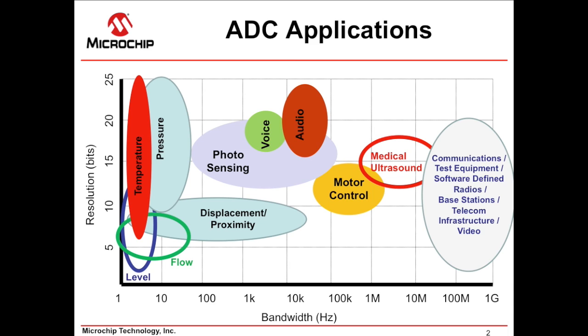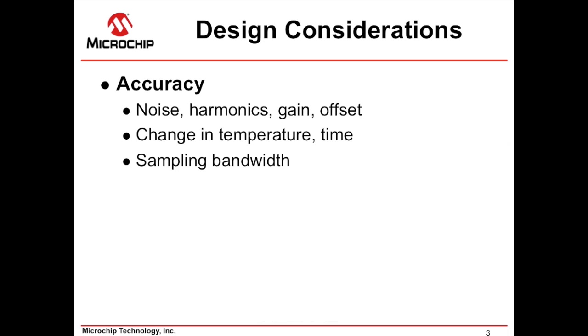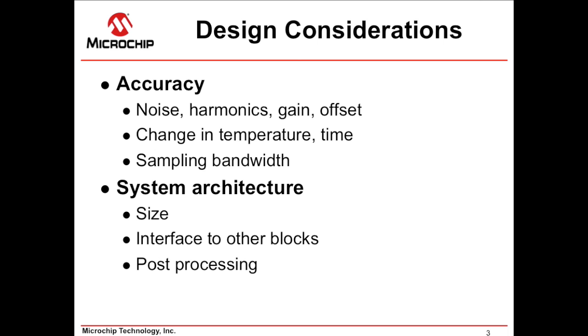When it comes to looking at various concerns or considerations that you have in your design, obviously, accuracy is one of the first things you look at. How accurate do you need to be measuring the signal? So, some things to look at in terms of accuracy: obviously, your noise, harmonics, what's your gain and offset, what kind of environmental changes do you have? Changes over time? Changes in temperature? And, of course, how fast is the signal that you're monitoring? What kind of bandwidth do you actually need? In addition to that, you have concerns in terms of system architecture. Like, how big is your application? What's the size that you have to squeeze all this into? How are you interfacing to other blocks in your application? And what type of post-processing do you need to do with your data? And, of course, above all, everyone's always concerned about how much power you're using.